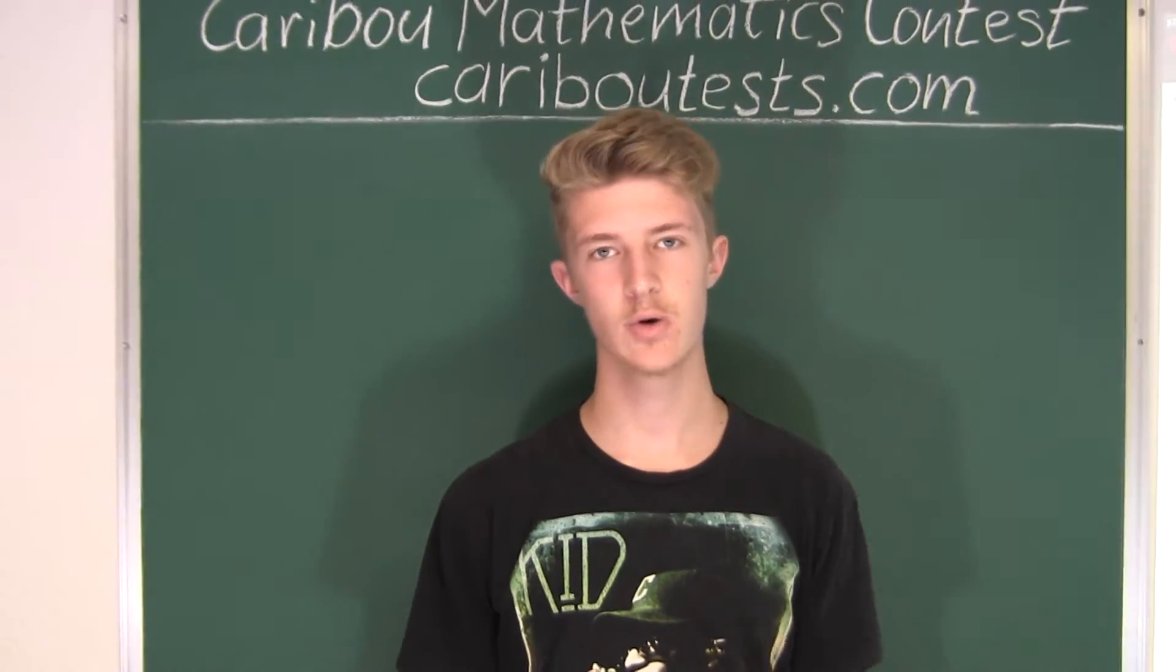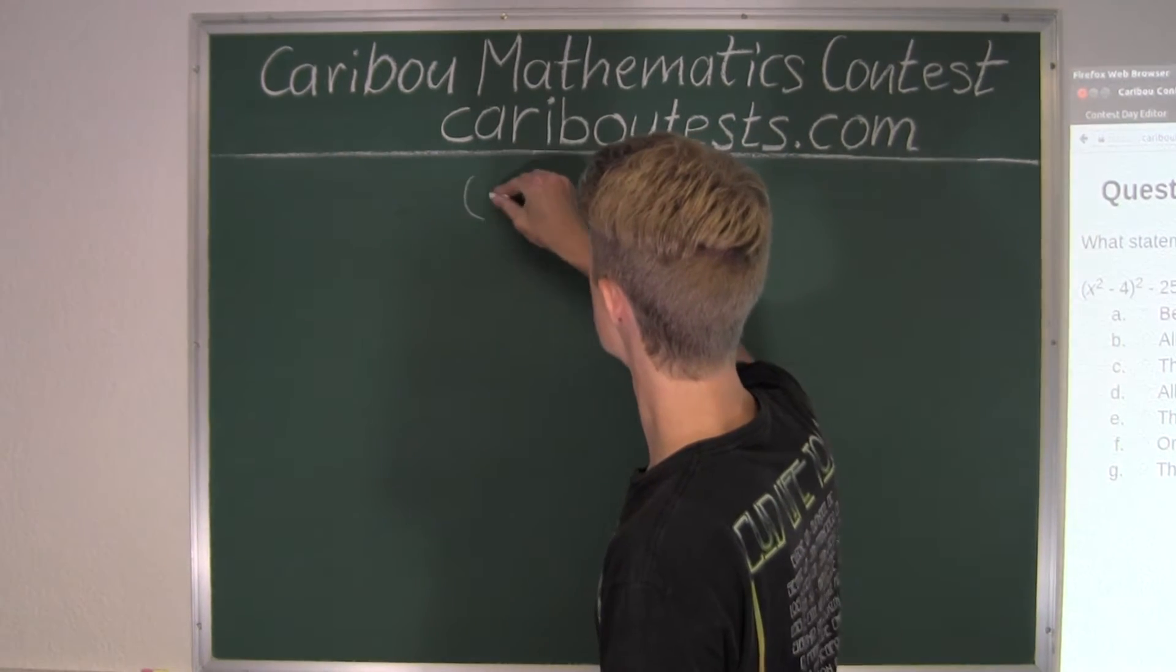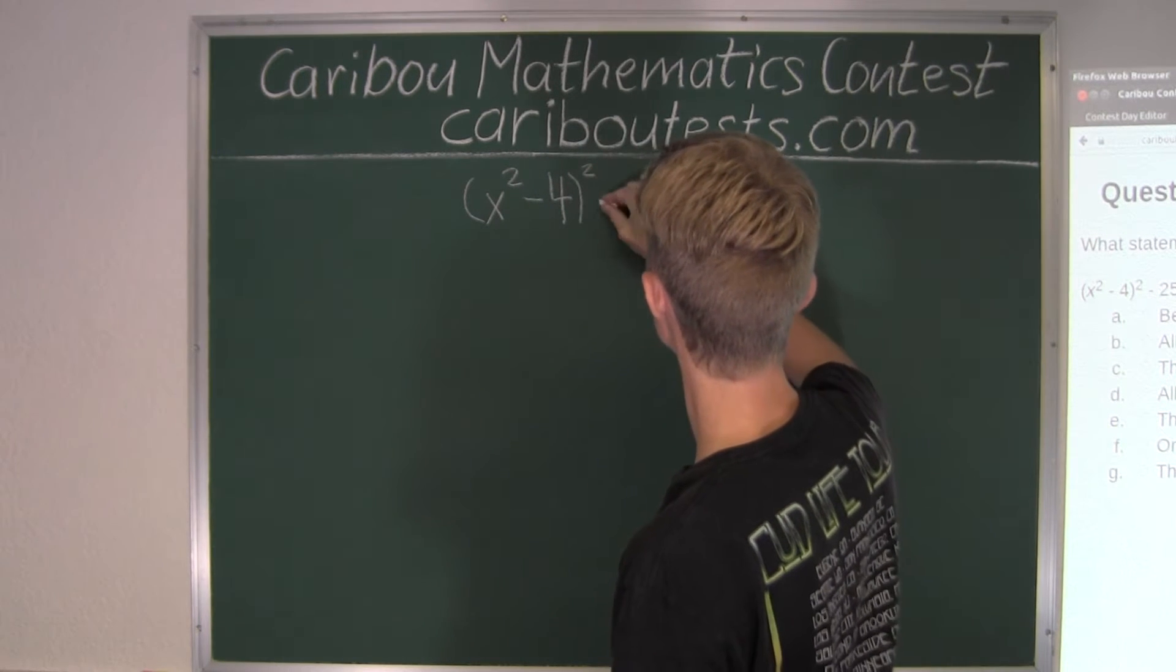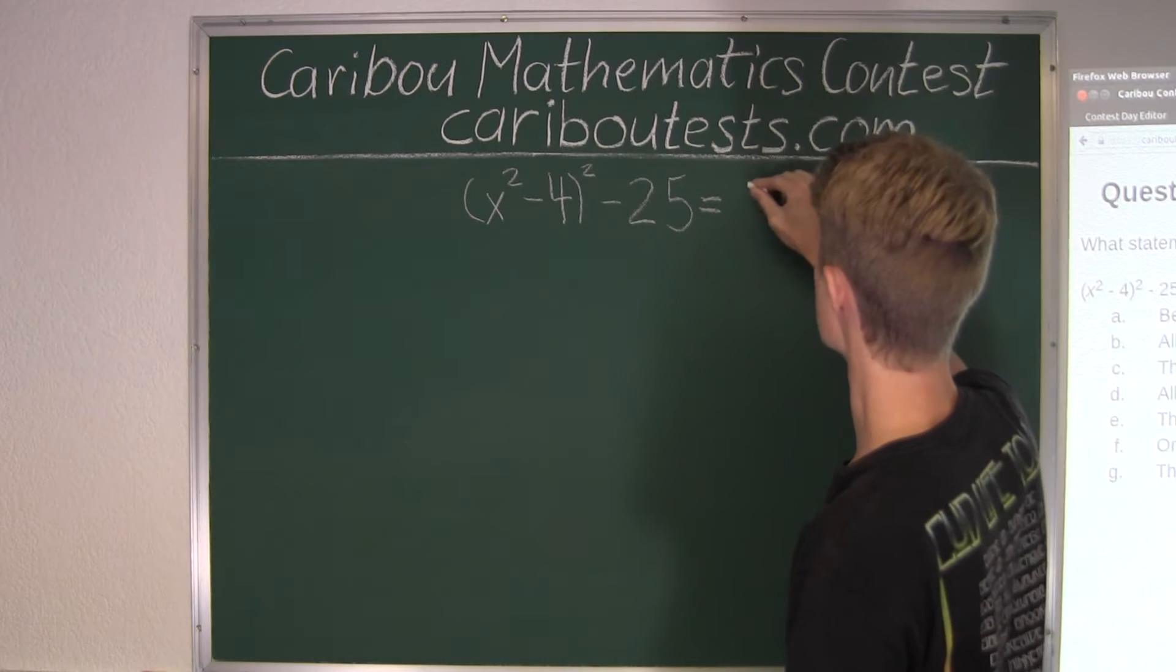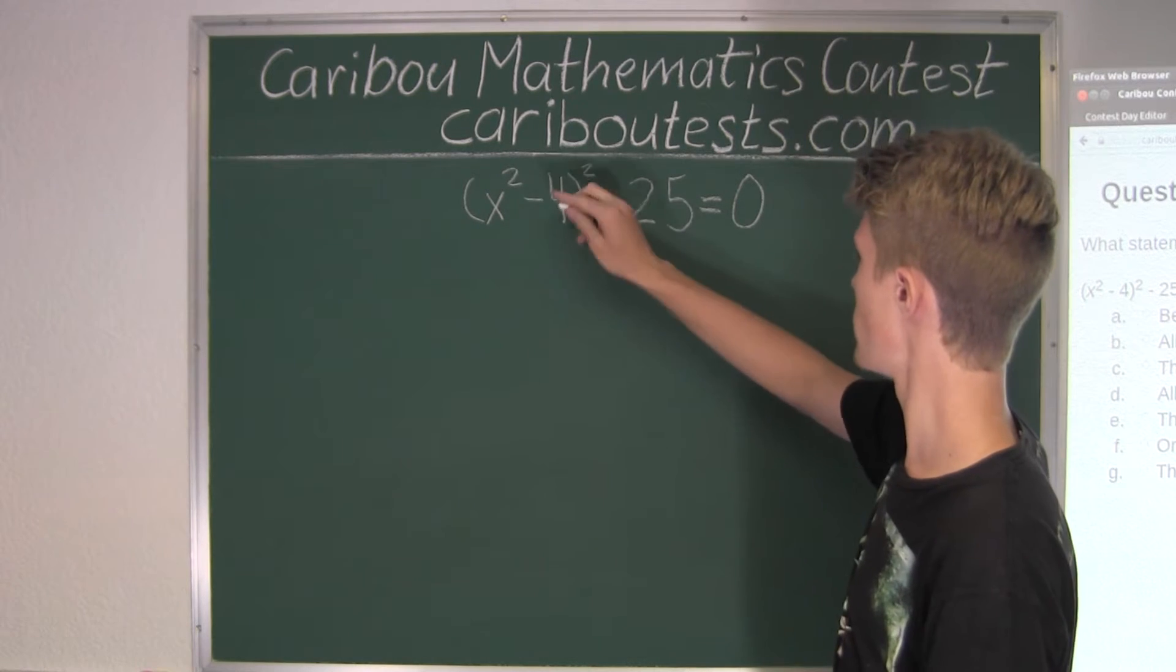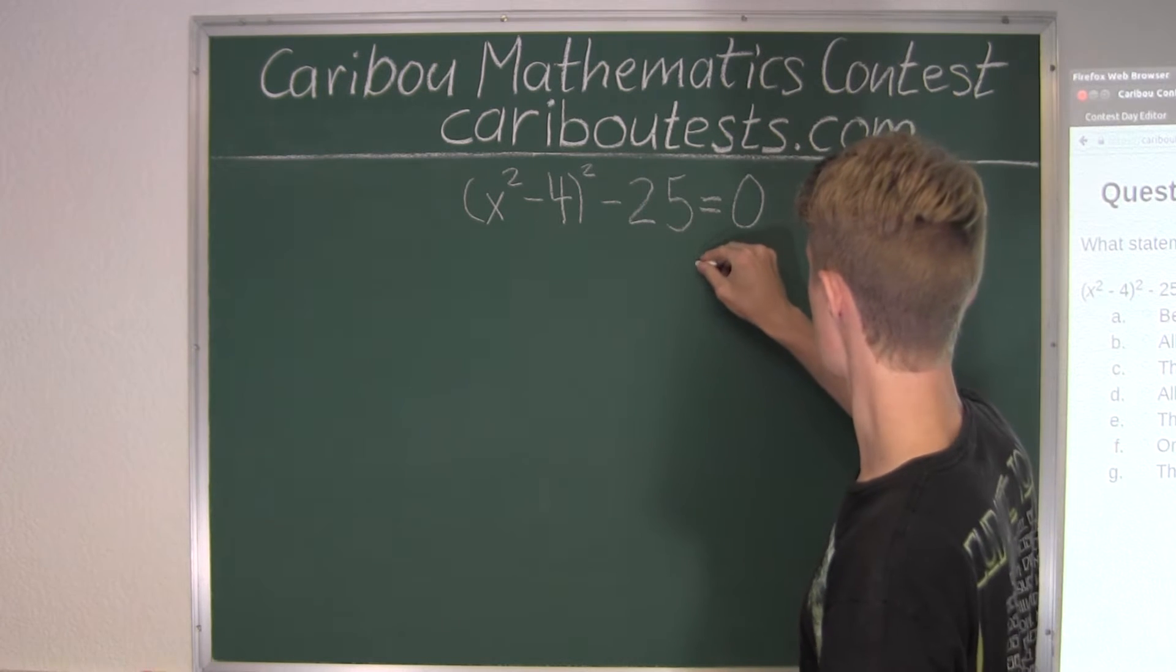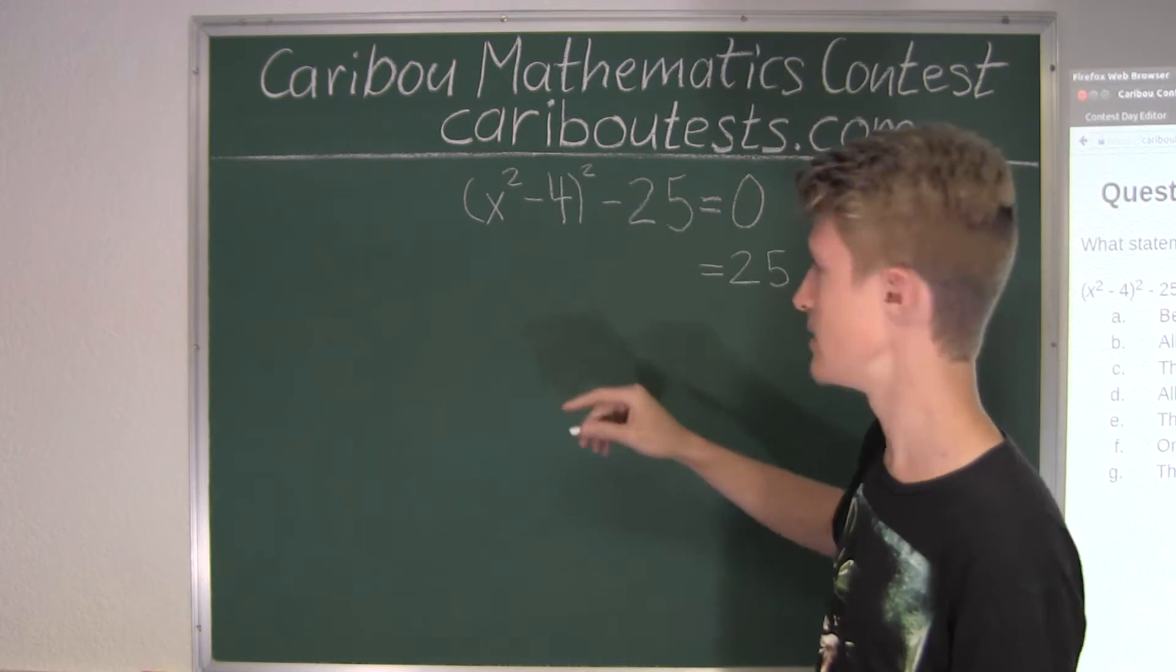Alright, so now we will find the solutions for x in this equation. So let's write it on the board. We want to find out x. And here, x squared is in this bracket. So we want just that on one side. So we will bring the negative 25 on the other side of the equation, which will put 25 here.